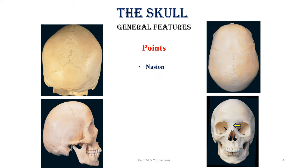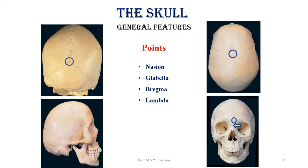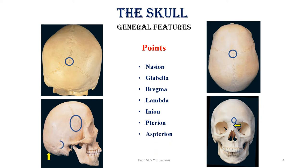The bony landmarks include: the nasion, which is the root of the nose; the glabella, which lies between the two supraciliary arches; the bregma, between the coronal and sagittal sutures; the lambda, between the sagittal and lambdoid sutures; the inion, which is the center of the external occipital protuberance; the pterion, important for its arterial relations; and the asterion, between the parietal, occipital, and temporal bones.